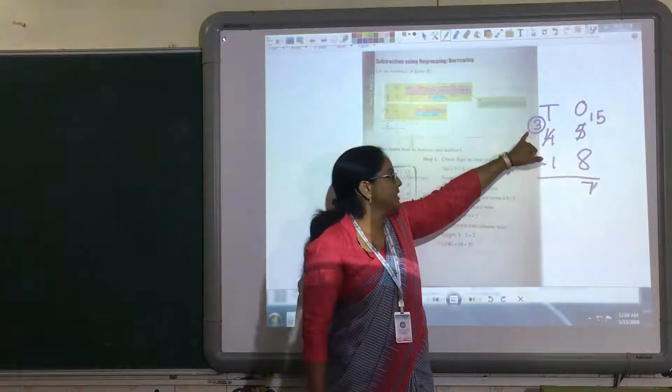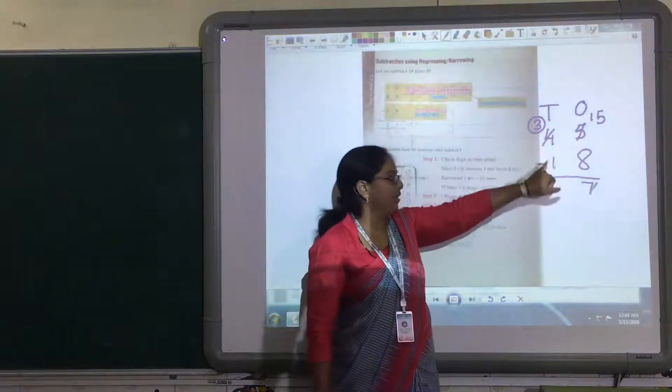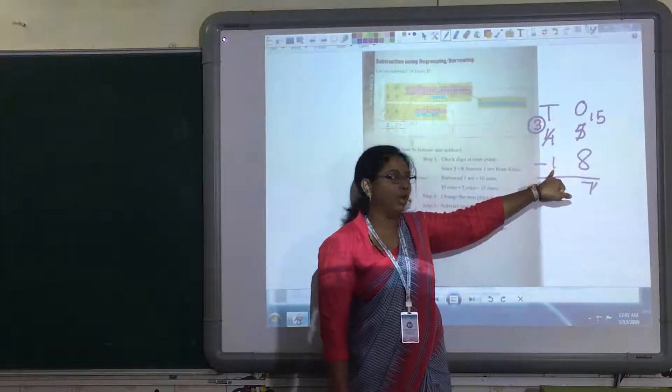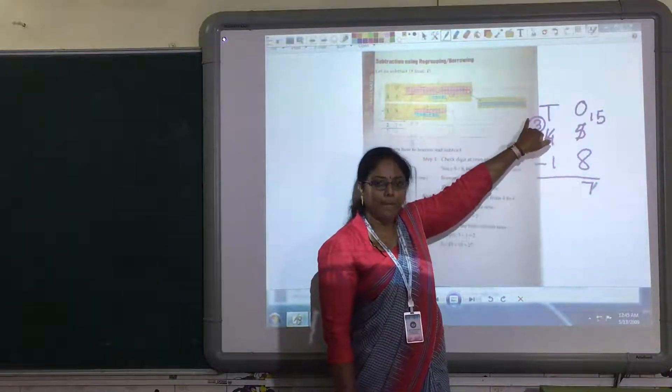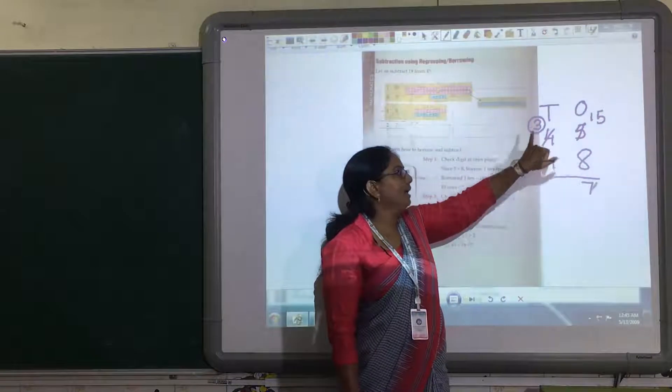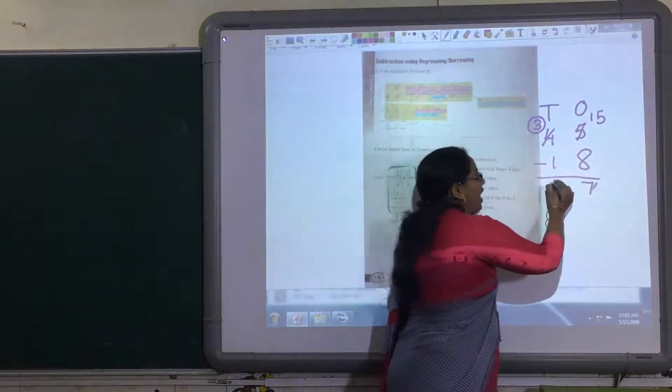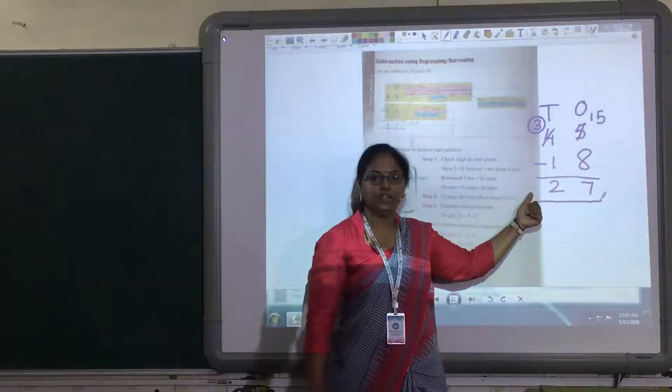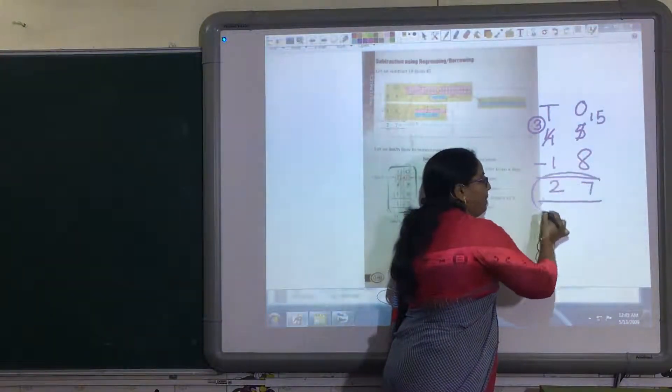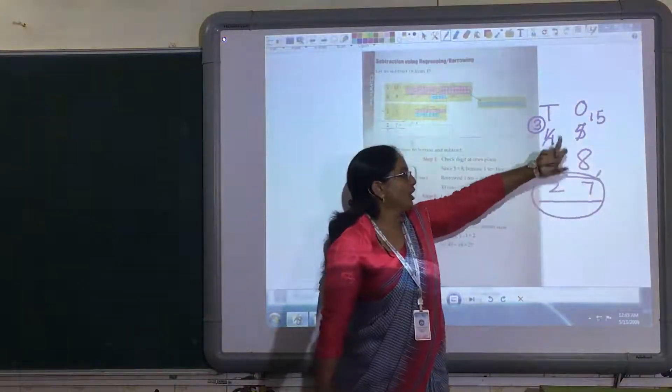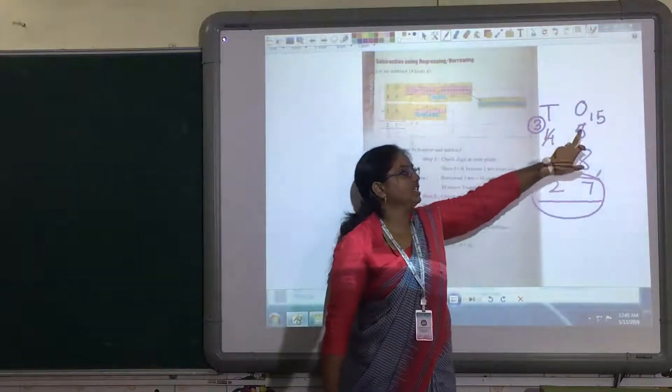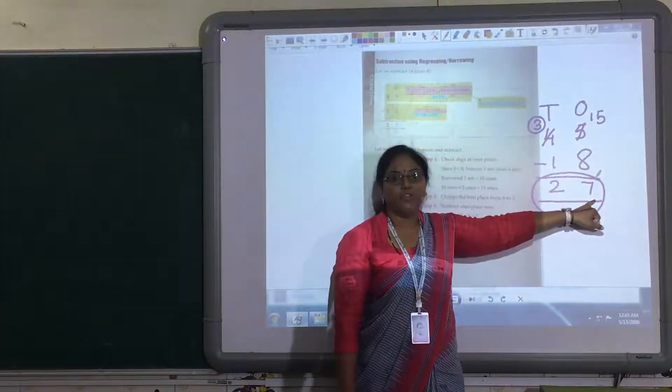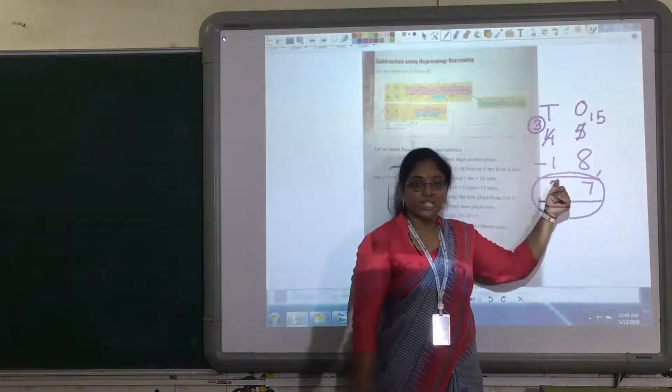Now, same way we are going to solve 10's side. Here, 3 is given. Here, 1 is given. Now, 3 is the bigger number and 1 is the smaller number. So, this smaller number can be minus from the bigger number. So, 3 minus 1, you will get the answer 2. As I told you in the previous video that the answer when you minus, the answer whatever you get after minusing these 2 digit numbers, the answer what you get, that is known as difference.